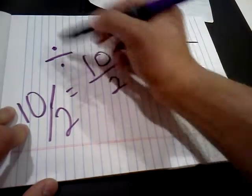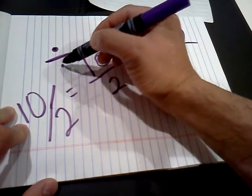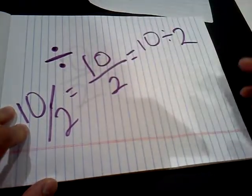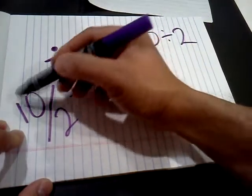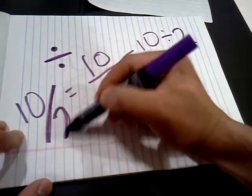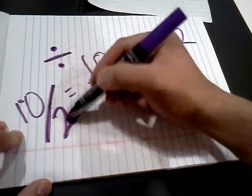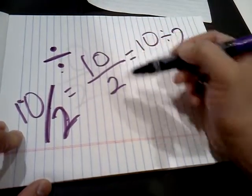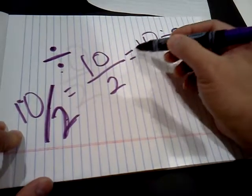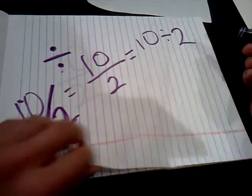Have you ever noticed how the division symbol actually looks like a fraction? Well, that's for a reason I believe. You also have 10 divided by 2, and it looks kind of like if you had the dot and the dot. Then you've got 10 over 2. That's a fraction. But it's the same thing as saying 10 divided by 2.